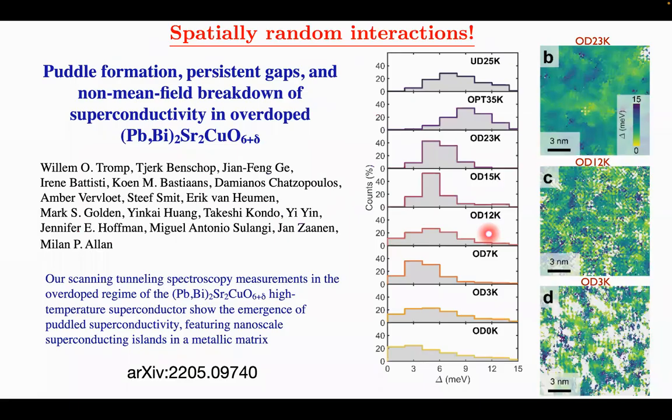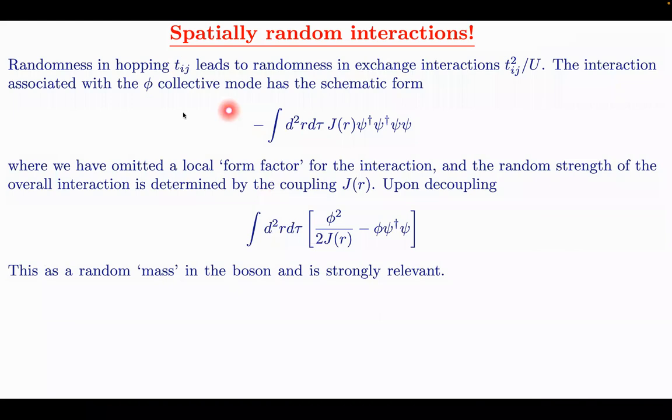So finally, our main result has to do with spatially random interaction. So why would you want to add spatially random interaction? Well, first of all, there's a huge amount of experimental evidence that interactions are very random. So here's one paper where you see that the gap, even at optimal doping, has a spread in value, which is of order the mean, so on a nanoscale. So there's definitely some interaction that's varying rapidly from point to point. And it's easy to understand why. If you have some randomness in a hopping TIJ, that will lead to random interaction, exchange interaction, J squared over U.